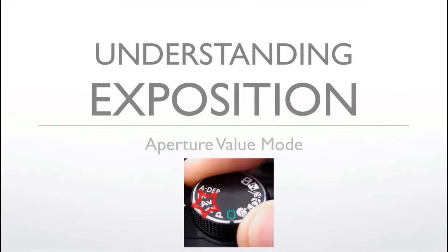Welcome to this first lesson on understanding the basics of photography. The first thing we're going to cover is the aperture value mode, called AV. You have a little wheel on the camera where you can choose different modes, and this one's called AV. The whole idea of aperture mode is that you decide what the aperture is and the camera decides how long to open the shutter.